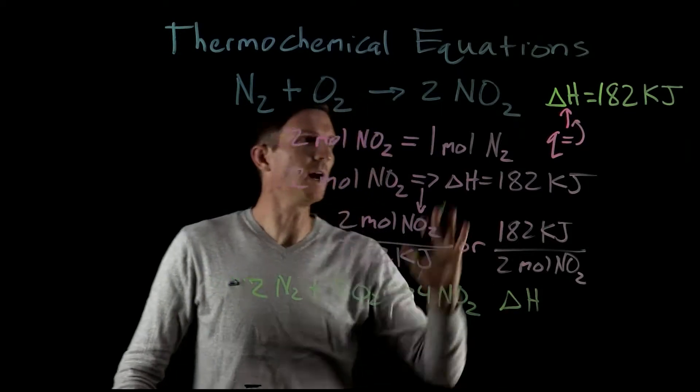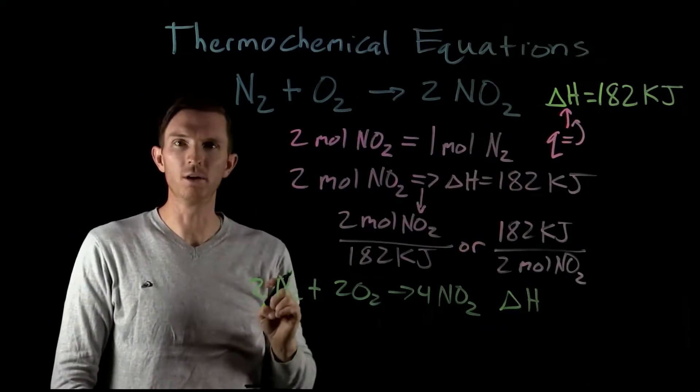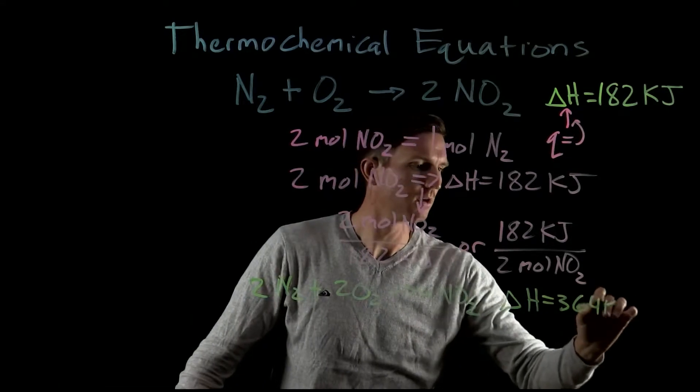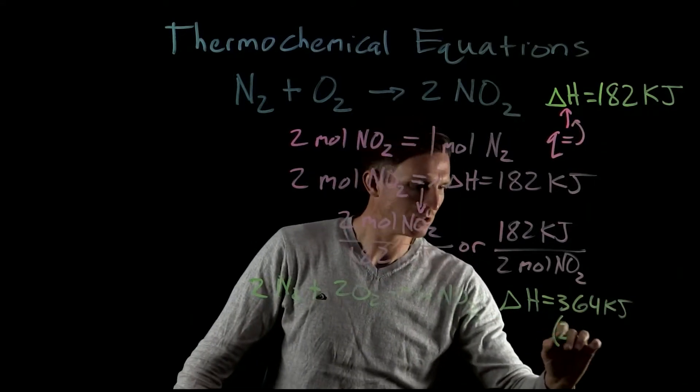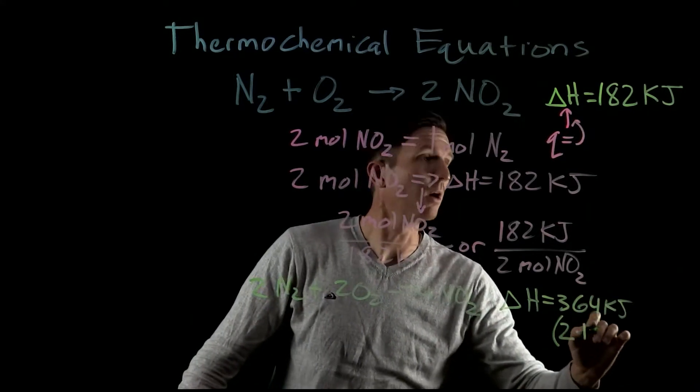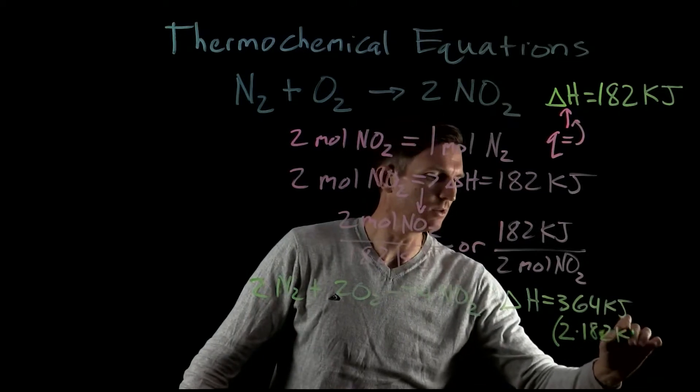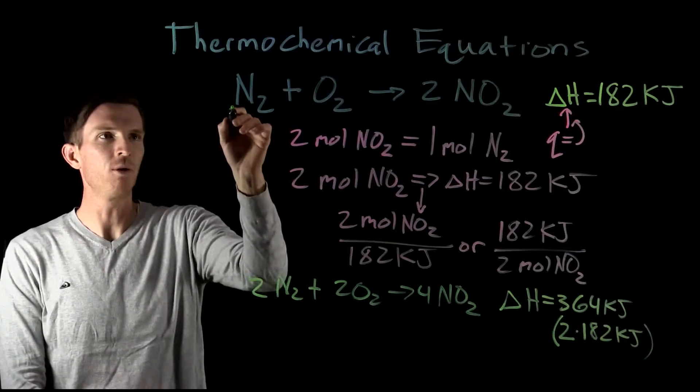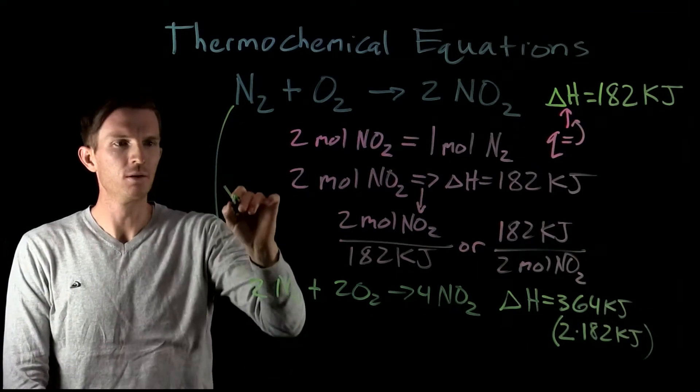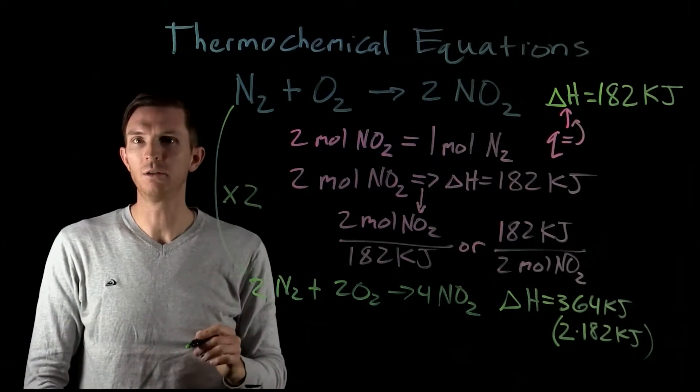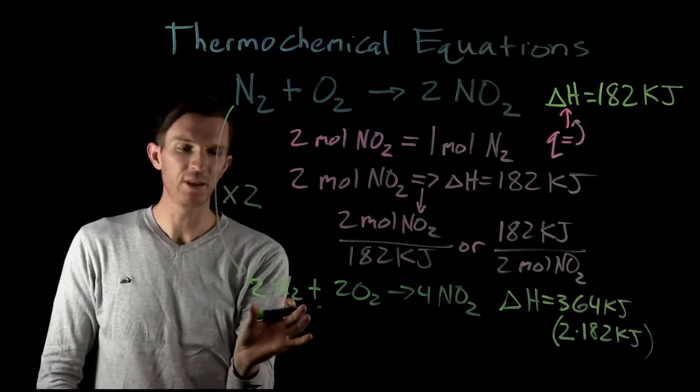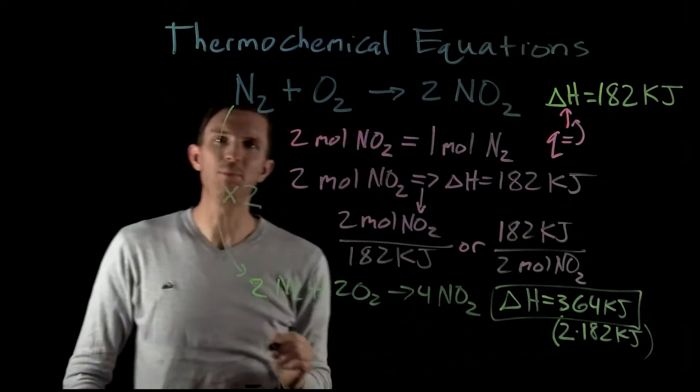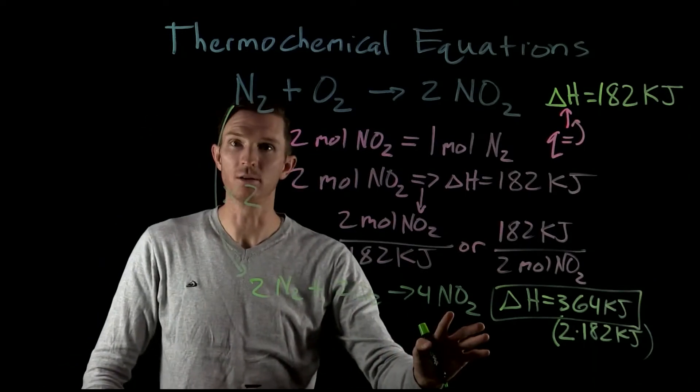Now my change in enthalpy is not still 182 kilojoules. Now it's 364 kilojoules. That's 2 times our 182 kilojoules for my original reaction. Now why did I say it's double? Comparing these two, all the coefficients are multiplied by 2. So now we see the enthalpy change that we write here is dependent upon how we write our reaction.